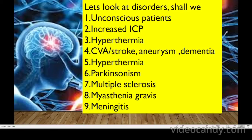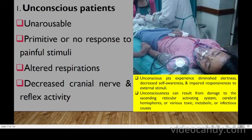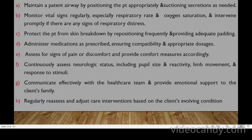We will cover several neurological conditions: unconscious patients, increased intracranial pressure, hypothermia, CVA/stroke, aneurysm, dementia, Parkinsonism, multiple sclerosis, myasthenia gravis, and meningitis. Unconscious patients are unarousable — they demonstrate no response to painful stimuli, with altered respiration and decreased cranial nerve and reflex activity. They experience diminished alertness, decreased self-awareness, and impaired responsiveness to external stimuli.